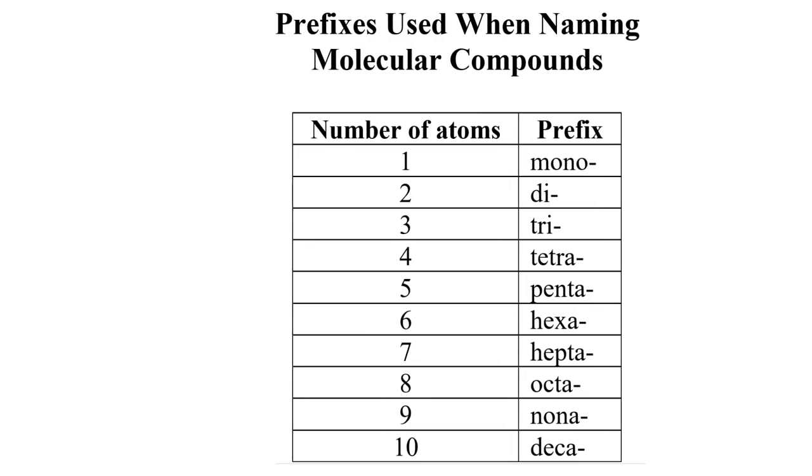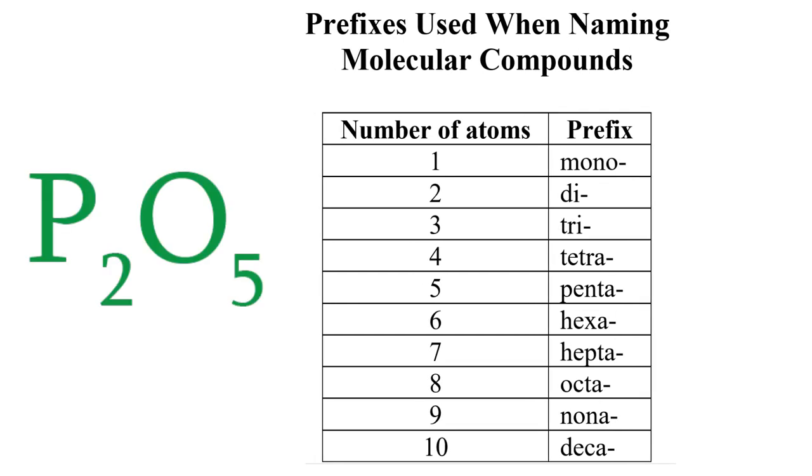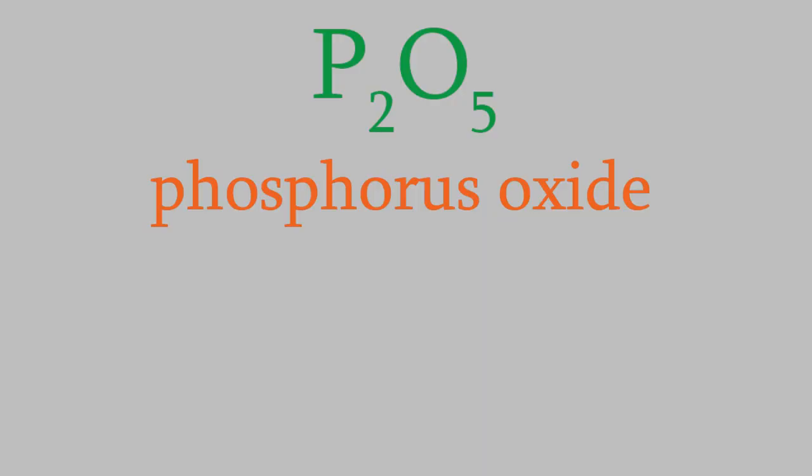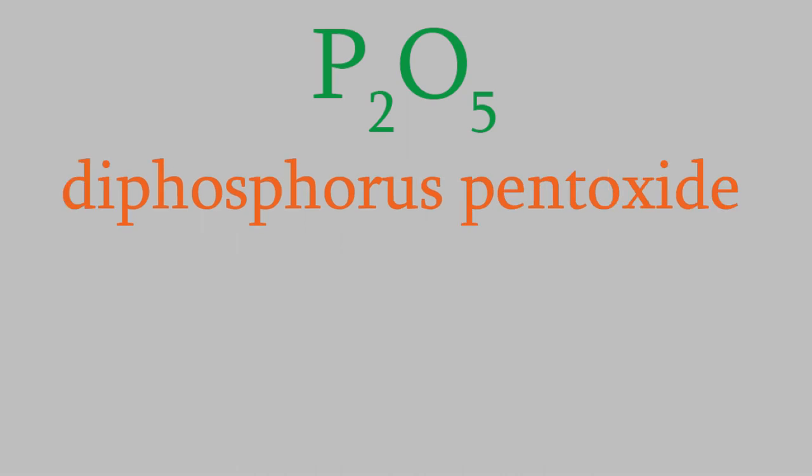The prefixes we need to use are summarized on this chart. So, for our example, our P2O5 molecule has two phosphorus atoms and five oxygens, so we'd use the prefix di- for the phosphorus and penta- for the oxygen. So the name of the molecule would be diphosphorus pentoxide.